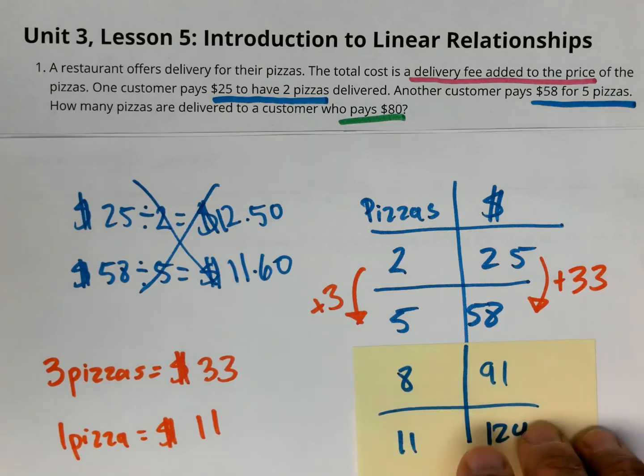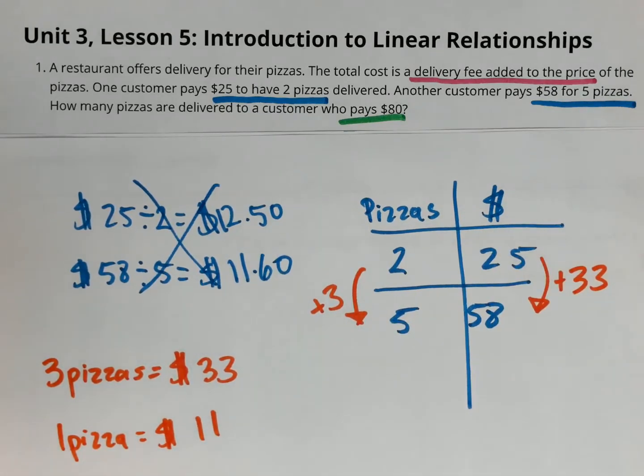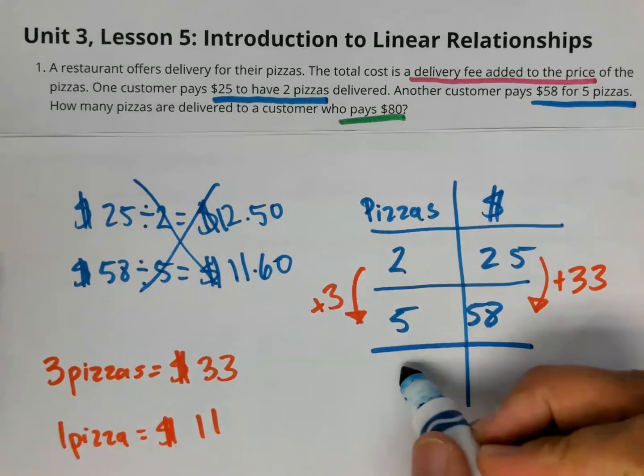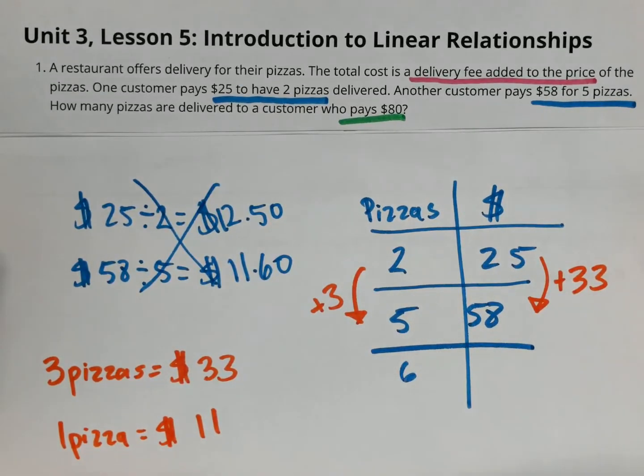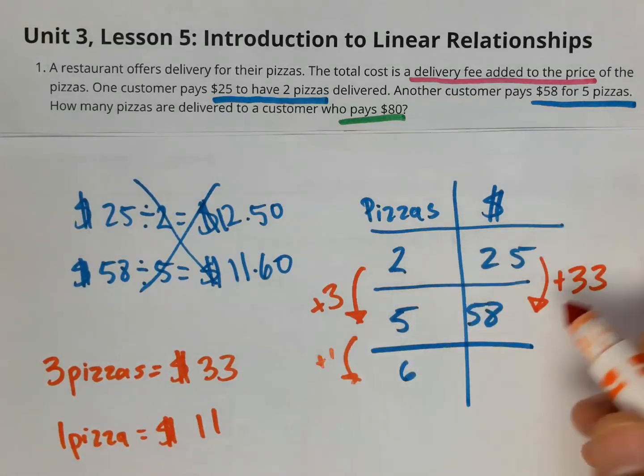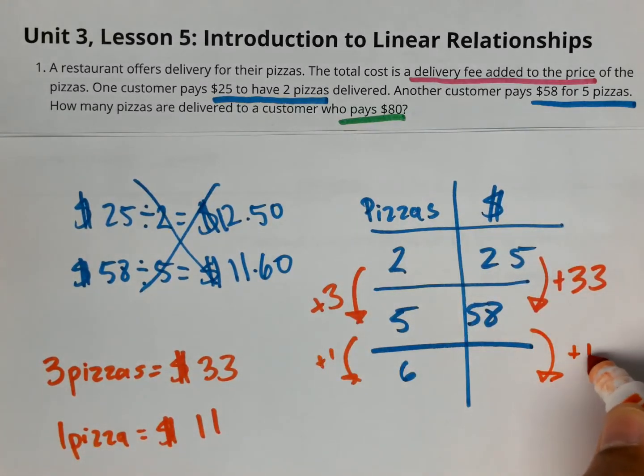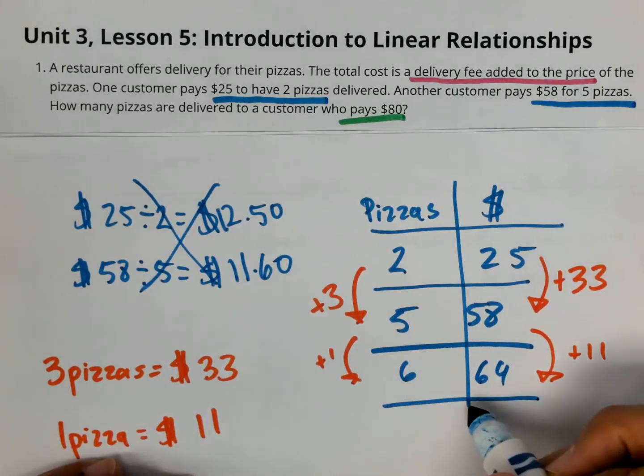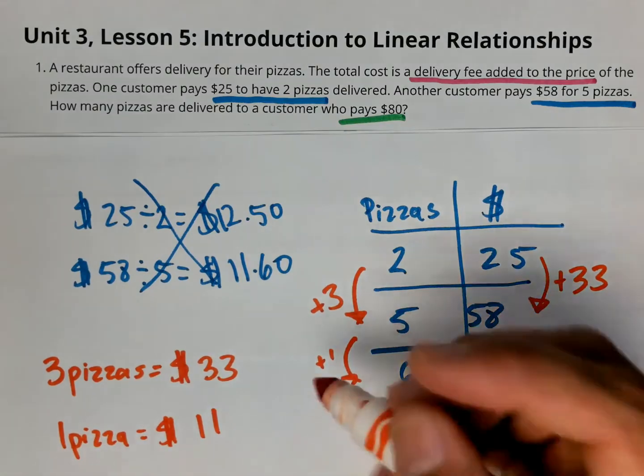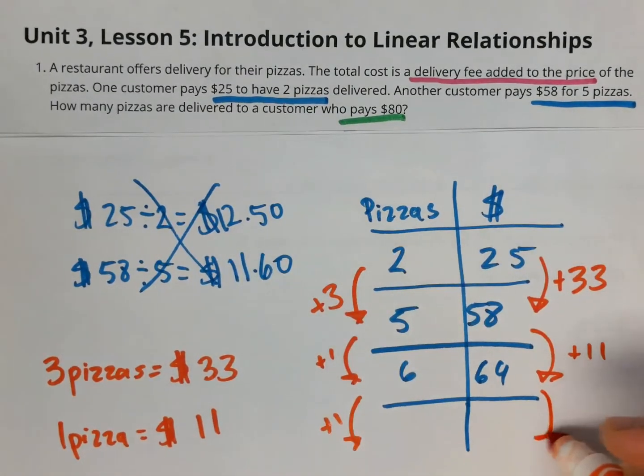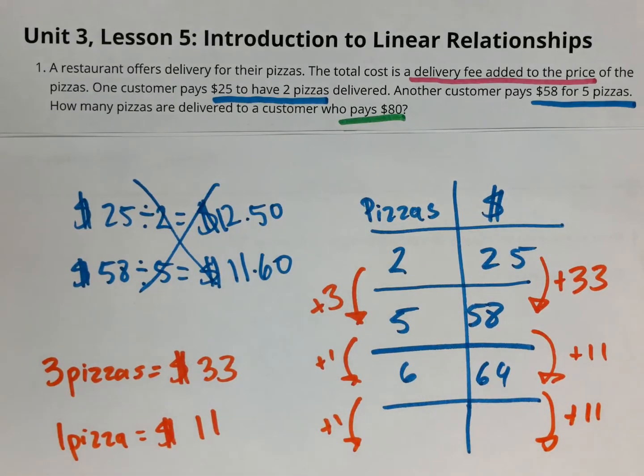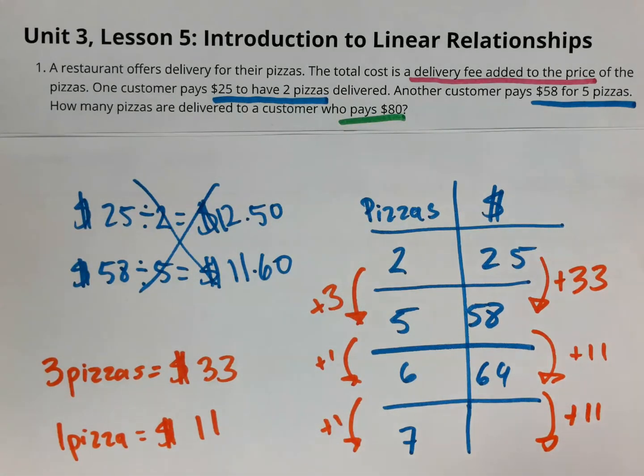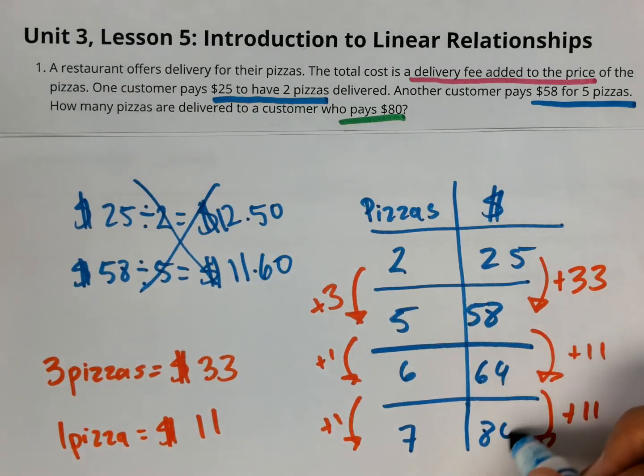So now what I'm going to do is I'm going to remove this. And when I continue the table, if I do add one more pizza, that's going to make that six pizzas. This is going plus one on this side, I'm going to add plus 11, which gives me $69. If I continue the table and add one pizza here, I'm going to also add $11 here. So I'm going to do 69 plus 11, which is $80.